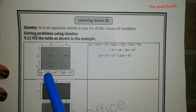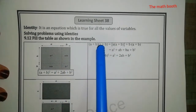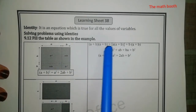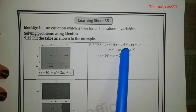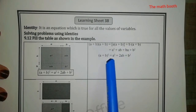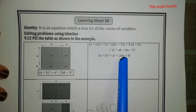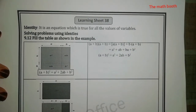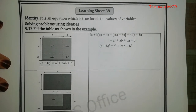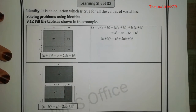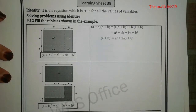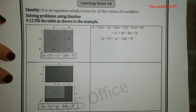For (a + b)(a + b), they have already shown how we get a² + 2ab + b². Like that, here we will see how we have to solve the remaining identities.